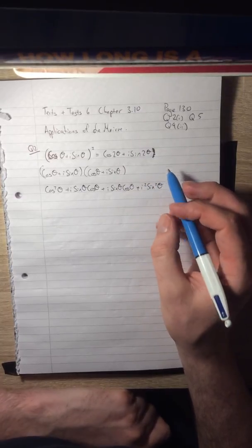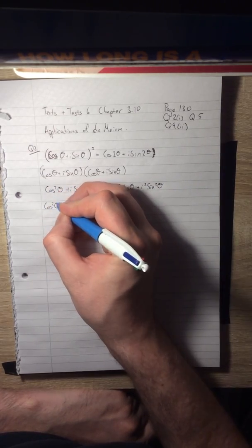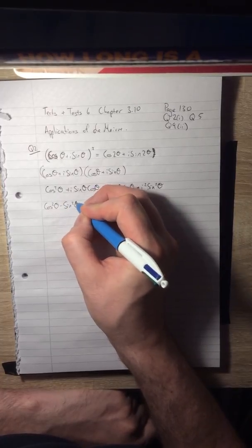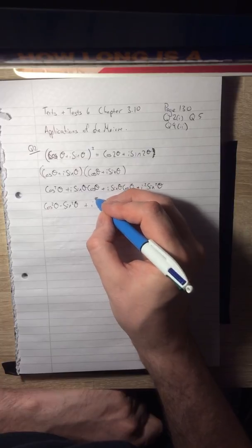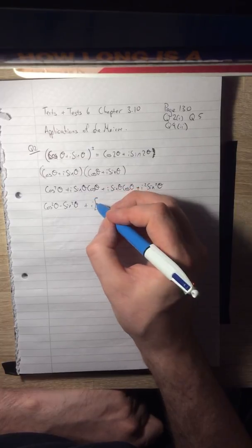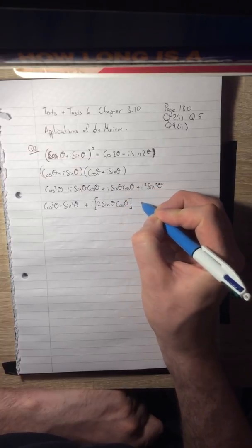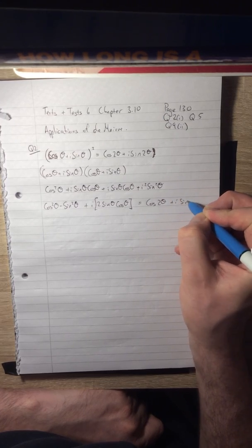And what we get here is cos²θ - sin²θ, that's the real part, plus i times 2 sin θ cos θ.